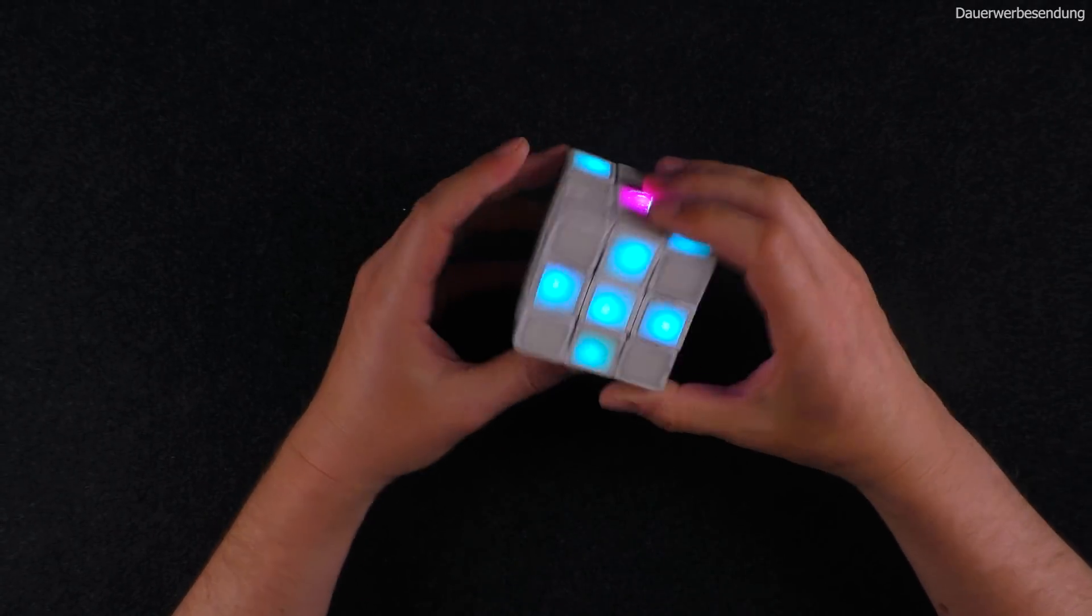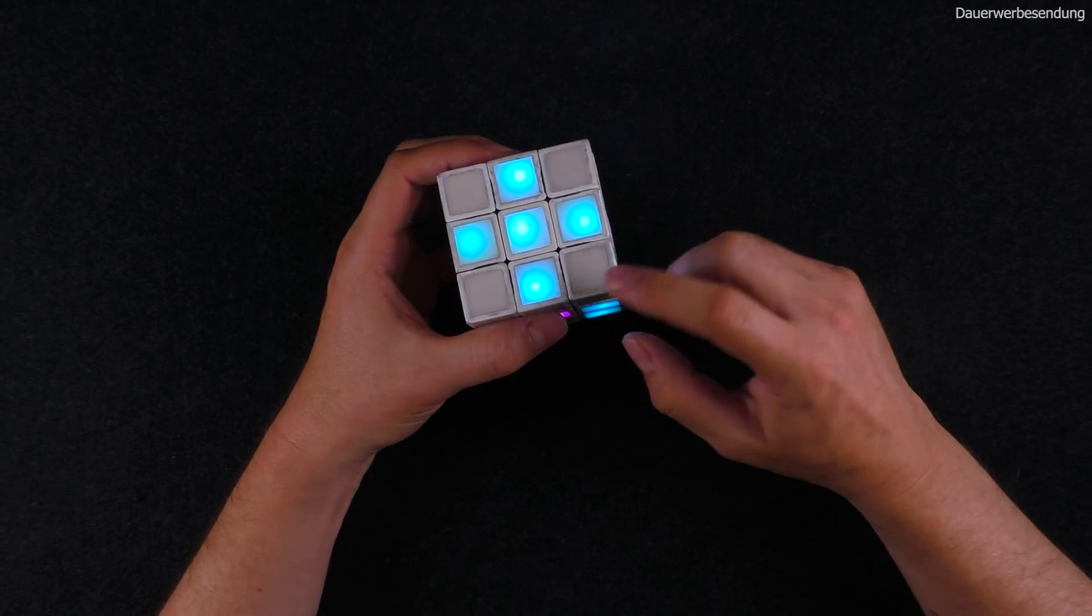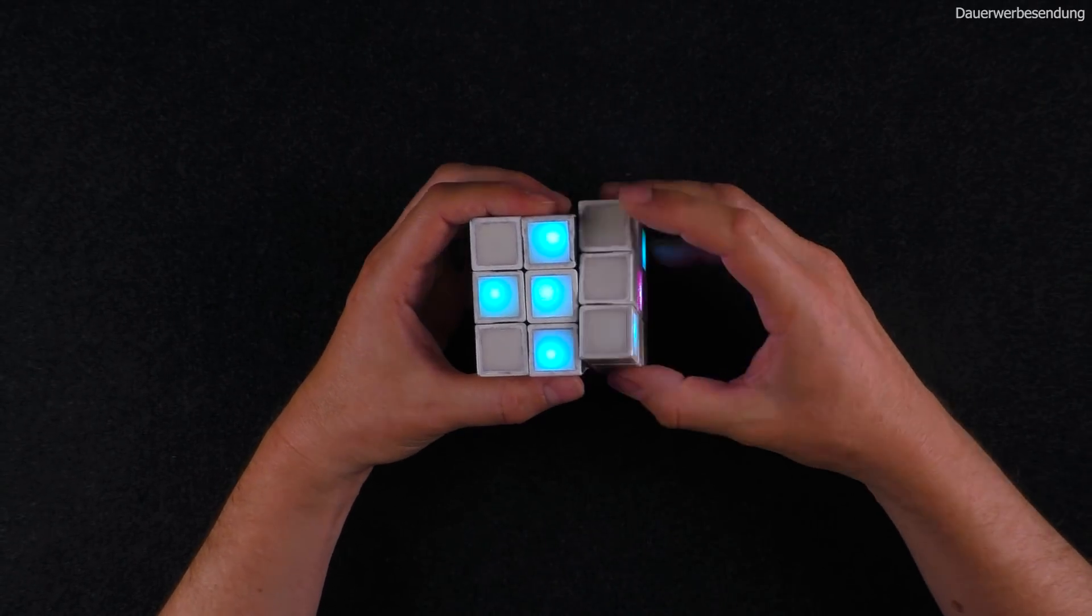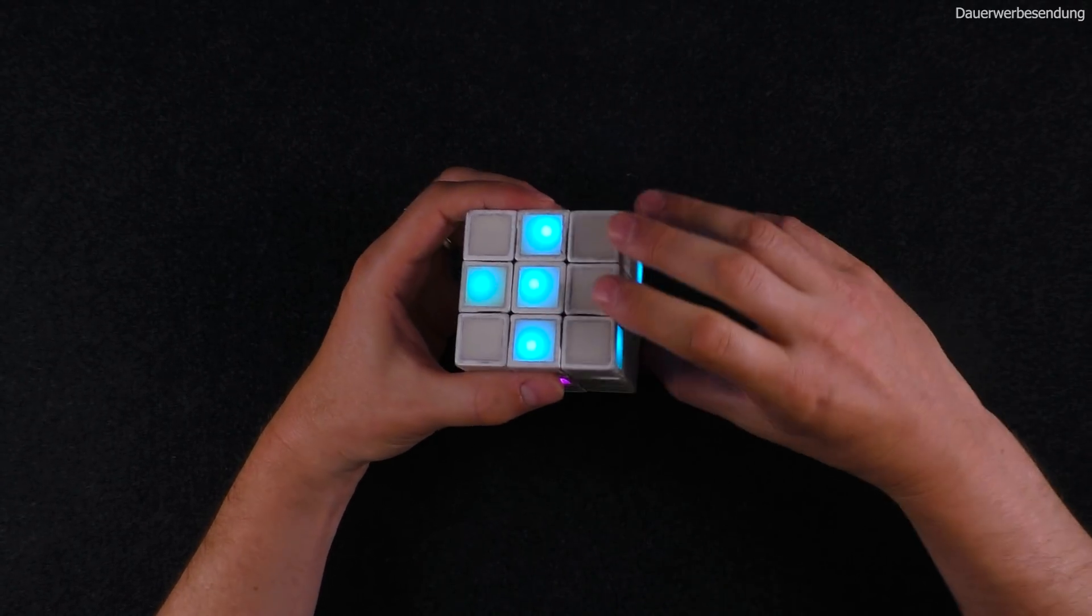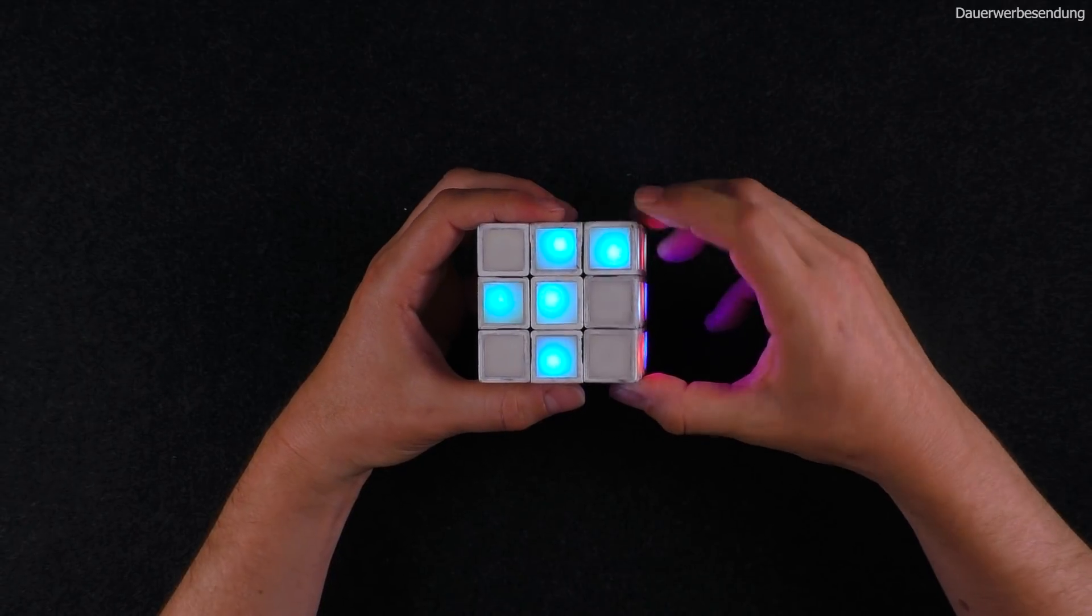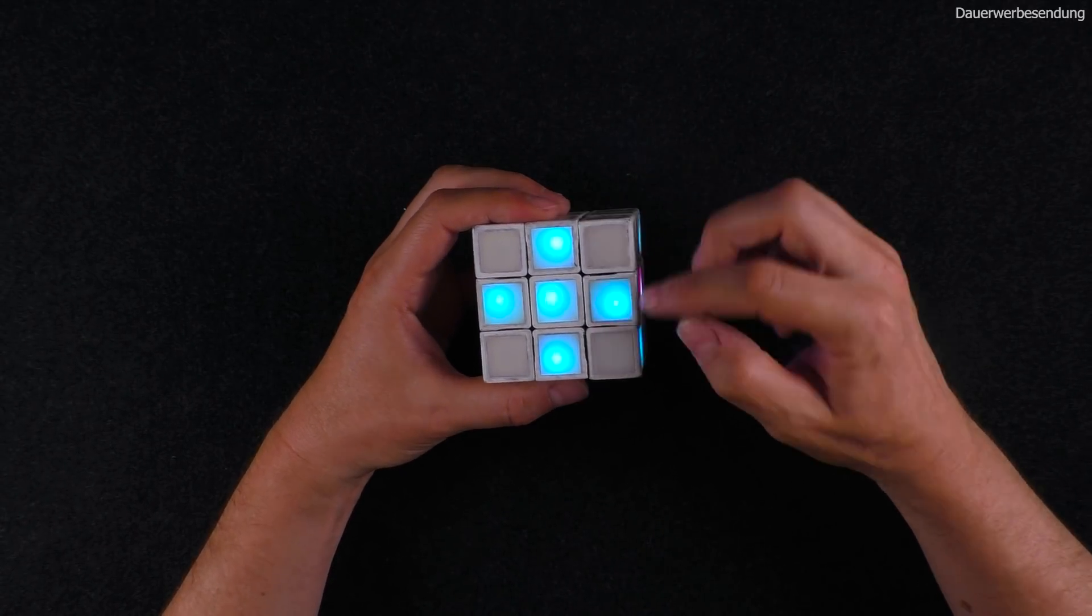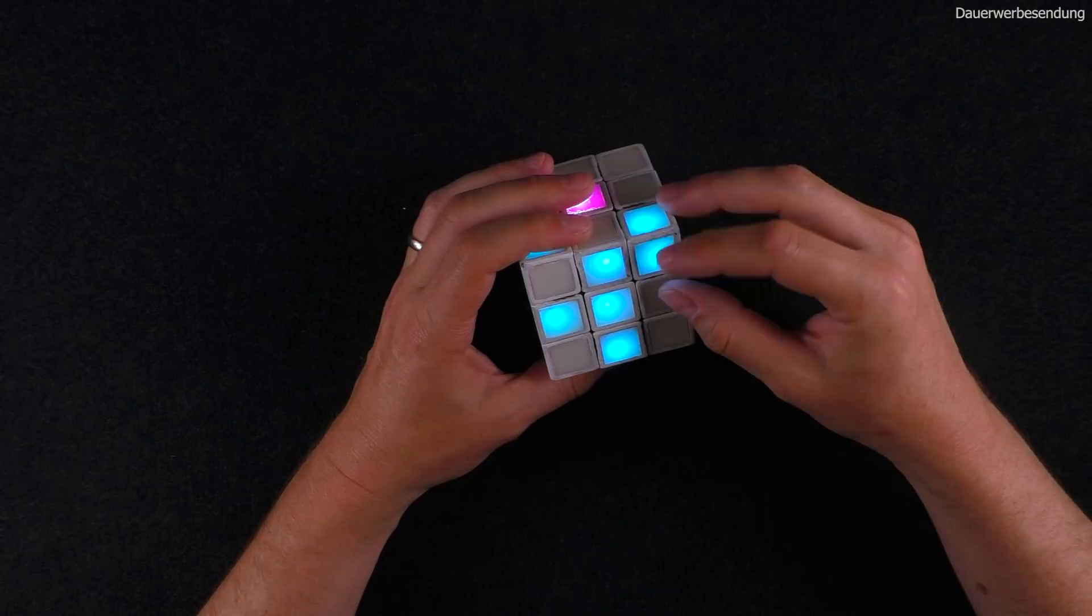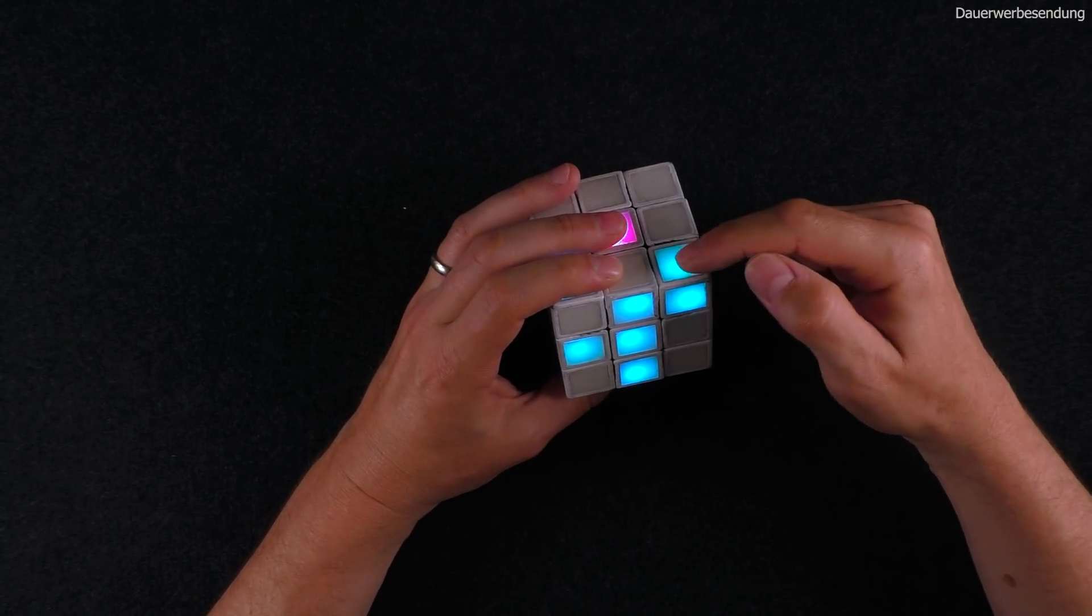Here we go now I got one cross and now I'm looking for the corner pieces so the cross is here. Here we got one corner piece and here we got the cross so I need to turn this one around it seems, I need to bring it up here.